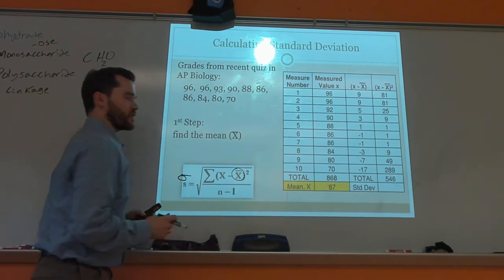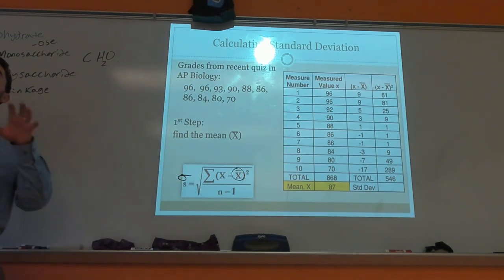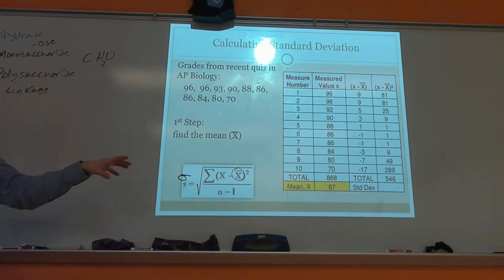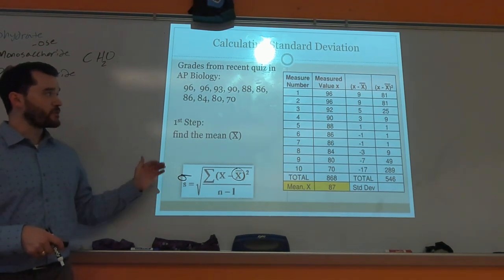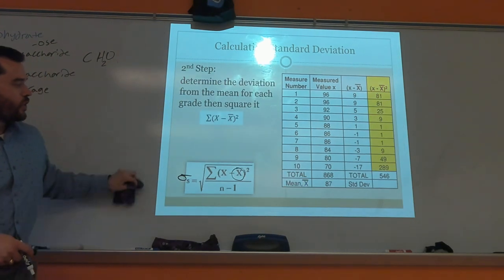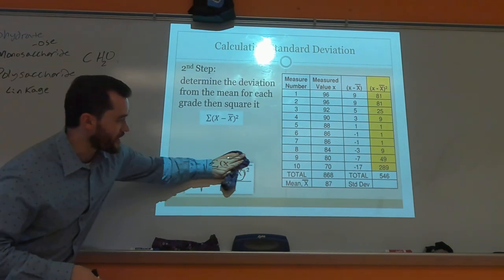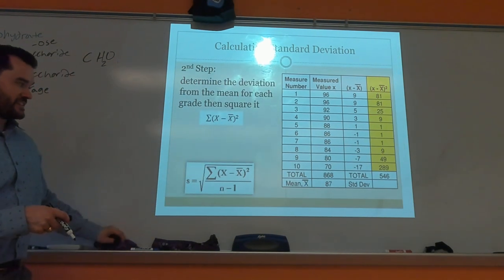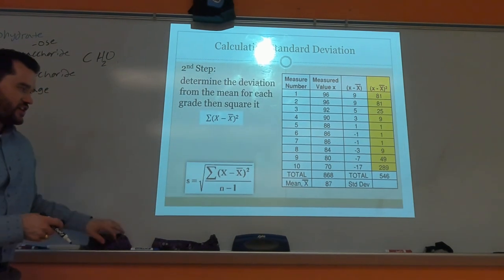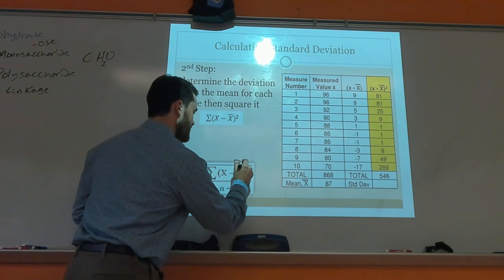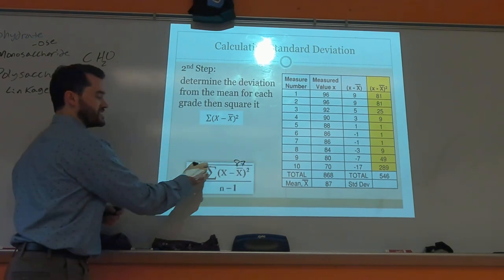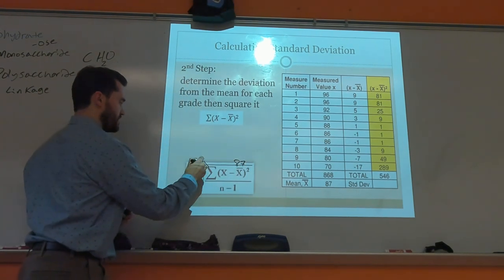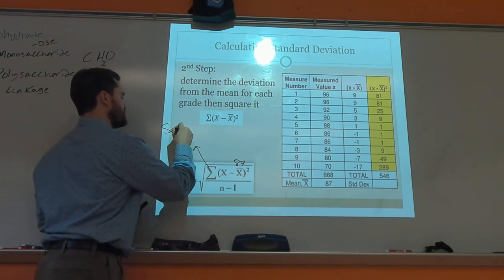Part of the standard deviation formula requires you to first find the mean. Once you know the mean is 87, you can plug 87 into the formula. The sigma symbol here means summation.